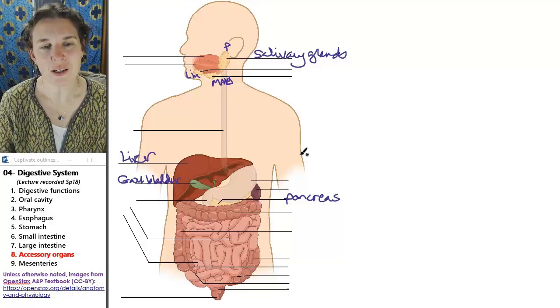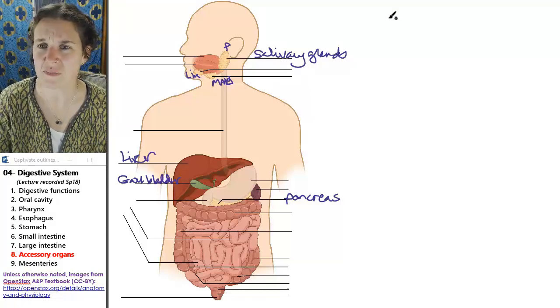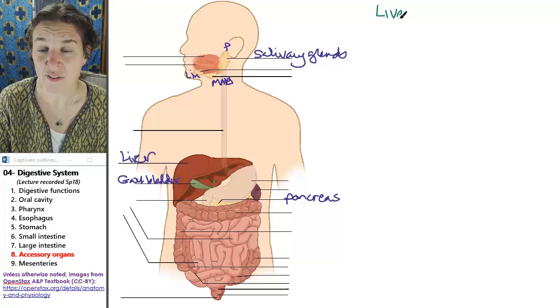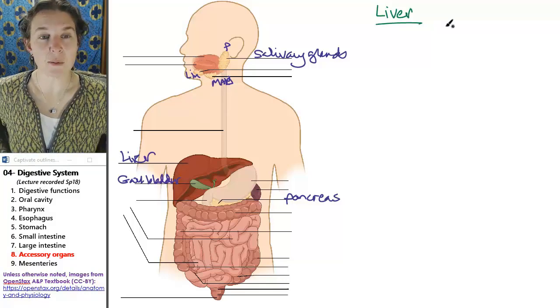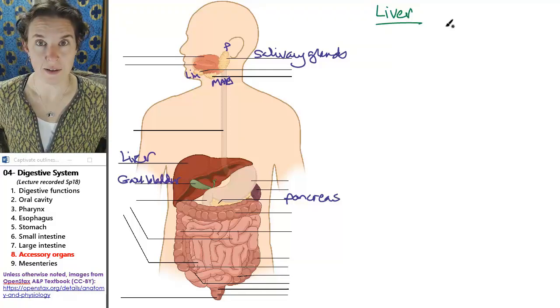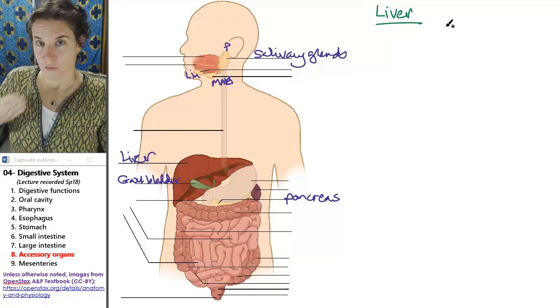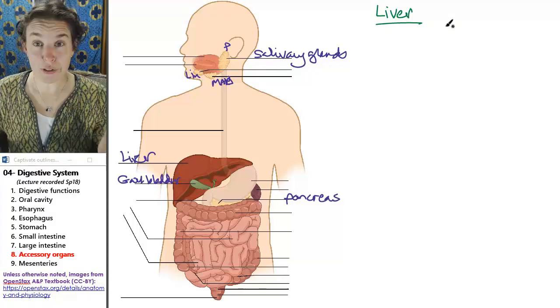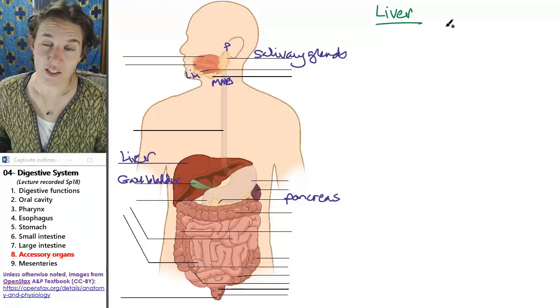So liver, gallbladder, pancreas - let's start out with the liver. You'll notice that most of us have our livers on our right side. So pat your liver right now. Your liver is a lifesaver. It is incredible.